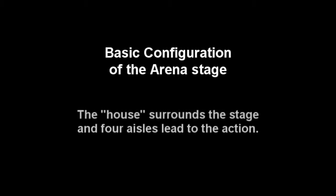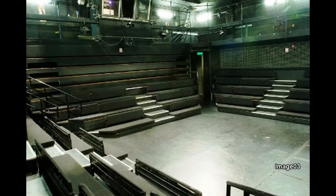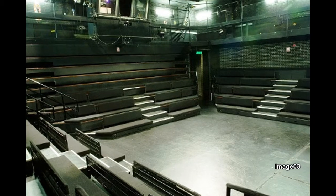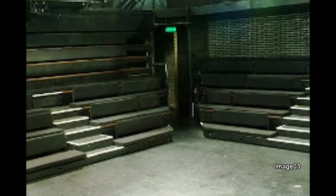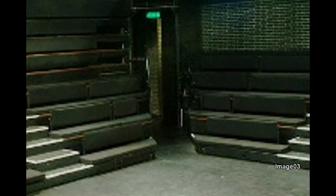The arena stage is surrounded by the audience — sometimes the stage is round, sometimes it's square. The basic configuration is that the space is completely surrounded by the audience with four aisles coming up through the audience and leading to the stage, surrounded on four sides. There is no stage house from which actors may make entrances and exits; the only access they have to the stage is through the aisles.